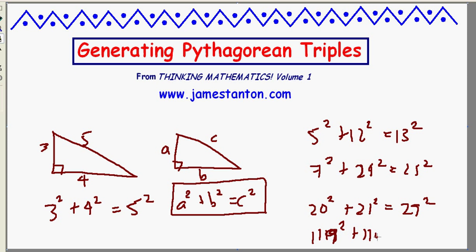They can be large: 119 squared, 120 squared is 169 squared, and so on and so on.